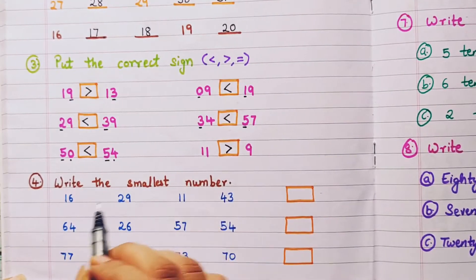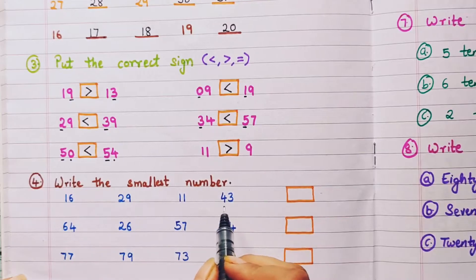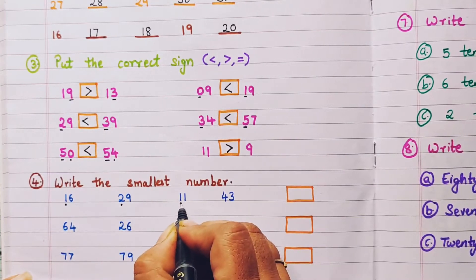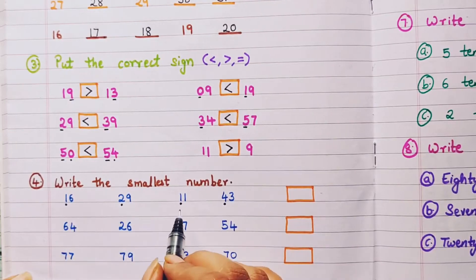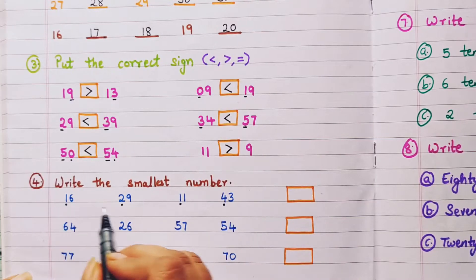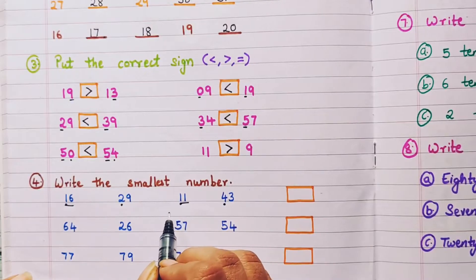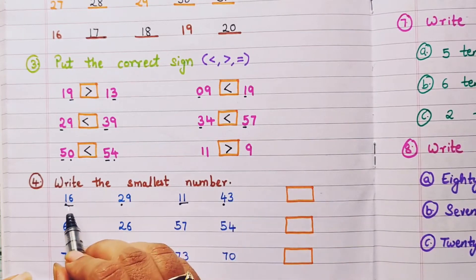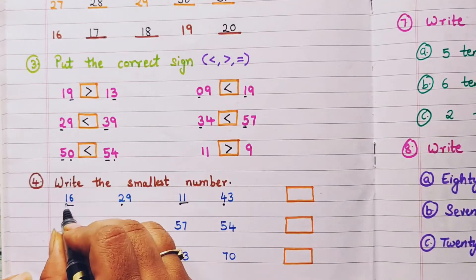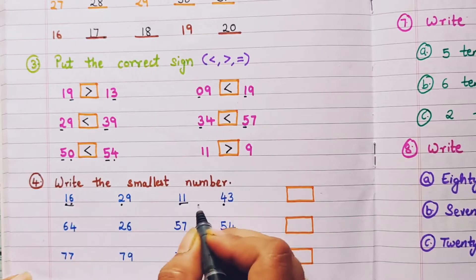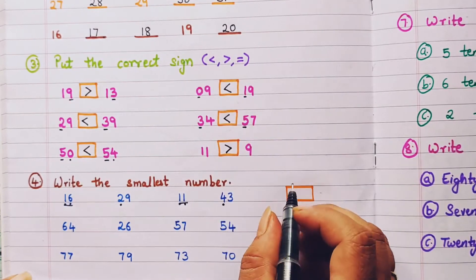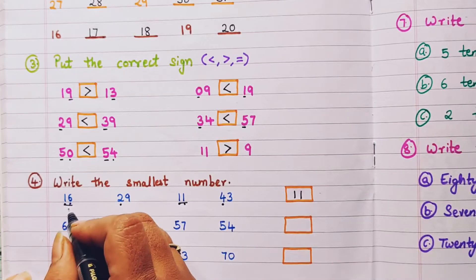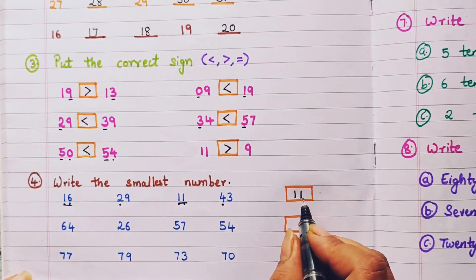Next: write the smallest number. Given 16, 29, 11, and 43. Check the tens place: 1, 2, 1, 4. The smallest tens digit is 1, so compare 16 and 11. In the ones place: 6 and 1. Since 1 is smaller than 6, 11 becomes the smallest number.